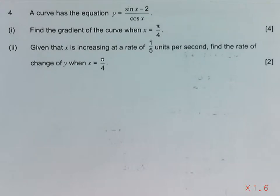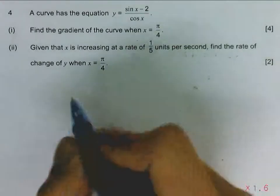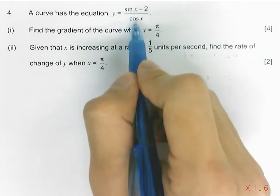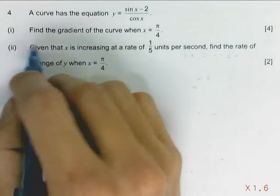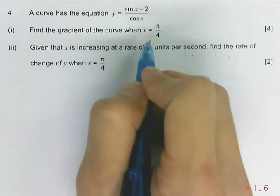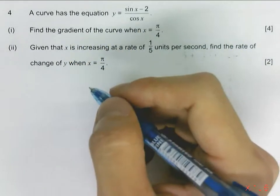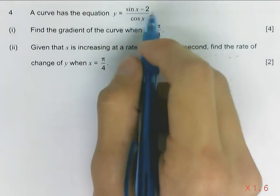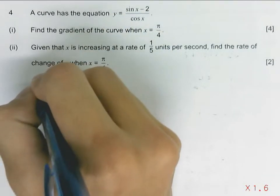This question is about rate of change. Following the curve equation, y equals sine x minus 2 over cosine x. Part 1 asks us to find the gradient of the curve when x equals π over 4. So we have to differentiate this function to get dy/dx, which is the gradient function.